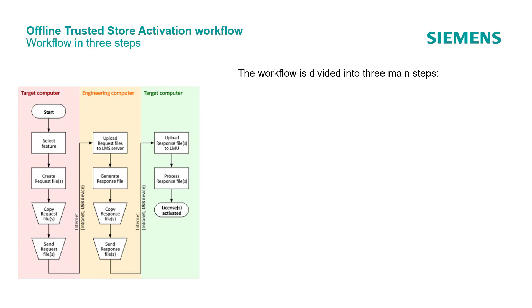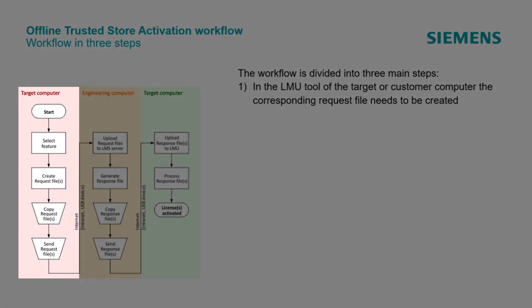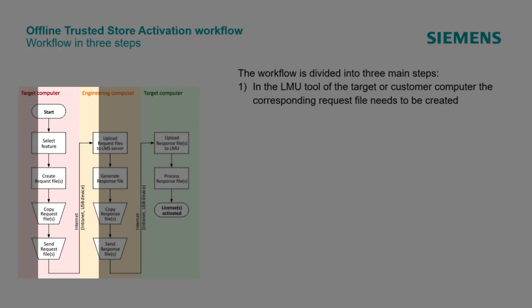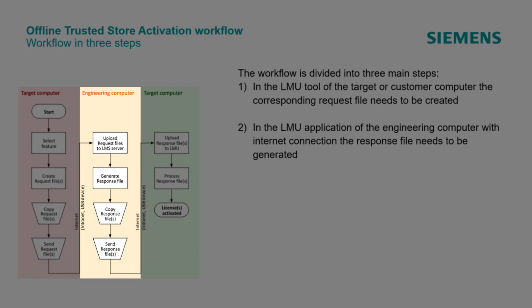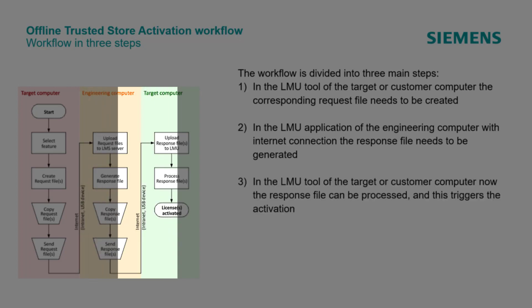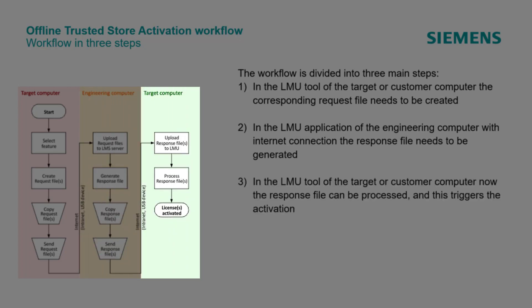The workflow is divided into three main steps. Step 1: In the LMU of the target or customer computer, the corresponding request file needs to be created. Step 2: In the LMU of the engineering computer with internet connection, the response file needs to be generated. Step 3: In the LMU of the target or customer computer, the response file can be processed, and this triggers the activation.